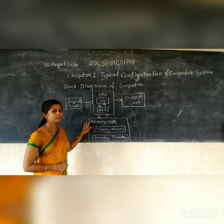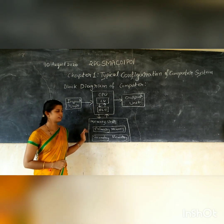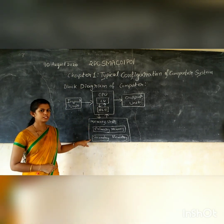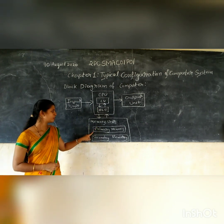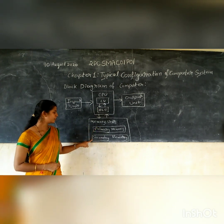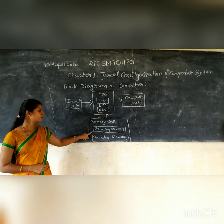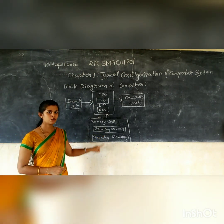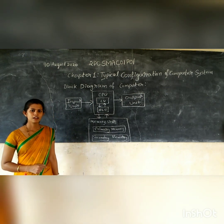Next is memory unit, which is also called the storage unit. There are two types of memory associated with the memory unit. First is primary memory, and second is secondary memory. Primary memory is also called the main memory of the computer.